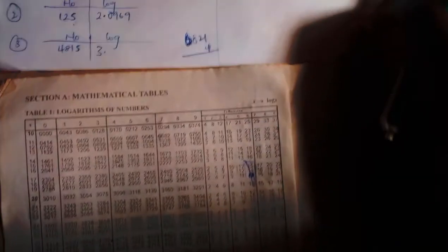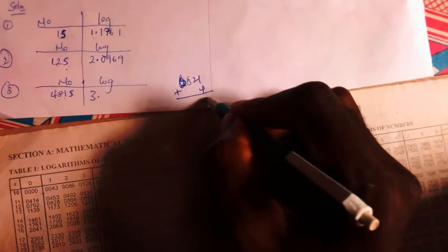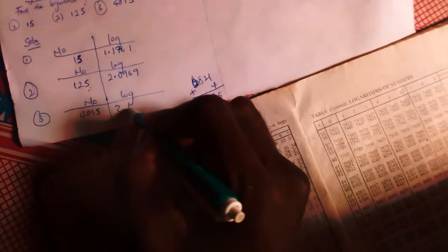So when we checked for 48 under 1, we got 6821. Difference 5 is 4. What will I be doing? I'll be adding the difference. That becomes 5, 2, 8, 6. So that's 6825.